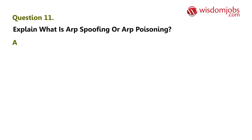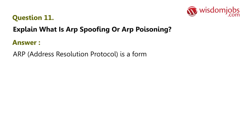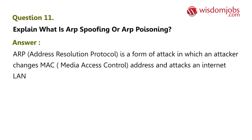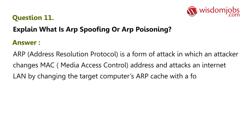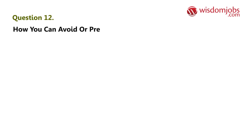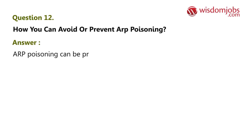Question 11: Explain what is ARP spoofing or ARP poisoning. Answer: ARP (Address Resolution Protocol) is a form of attack in which an attacker changes the MAC (Media Access Control) address and attacks an internet LAN by changing the target computer's ARP cache with forged ARP request and reply packets.